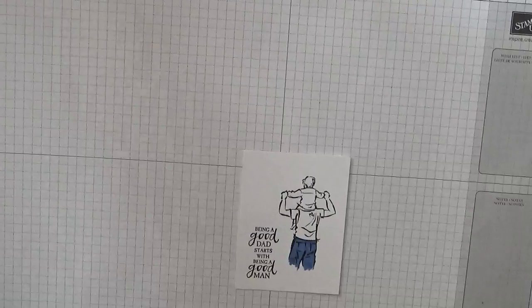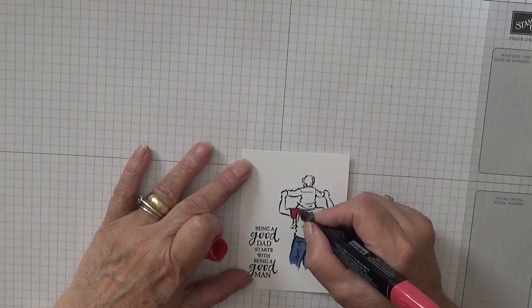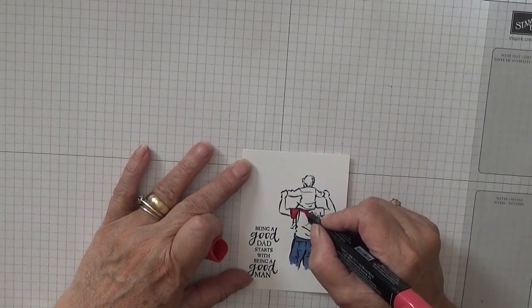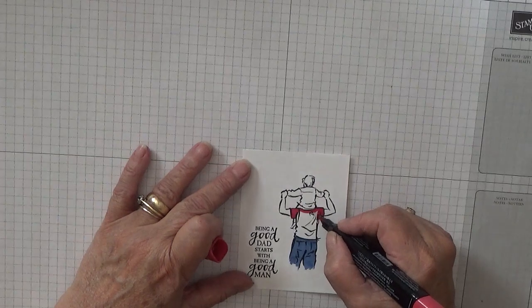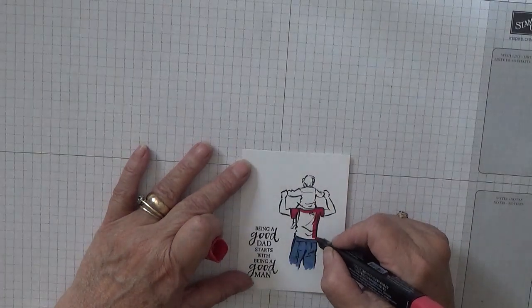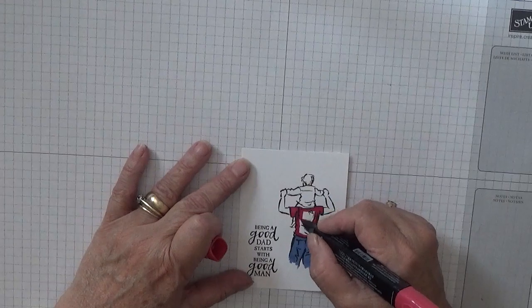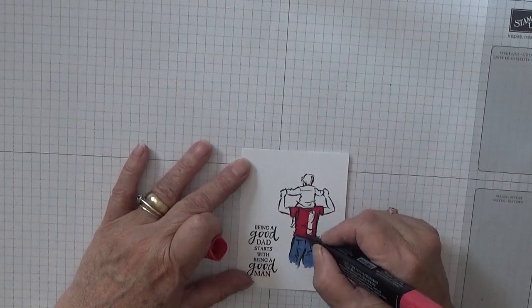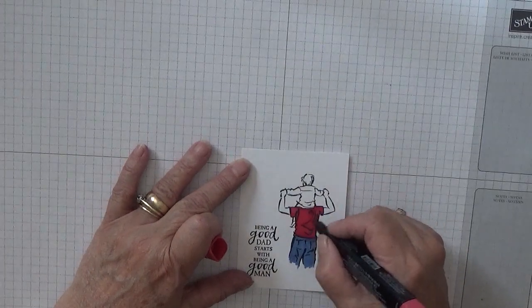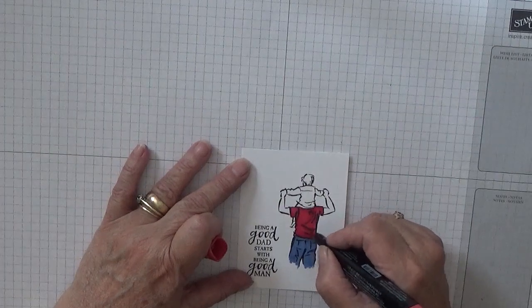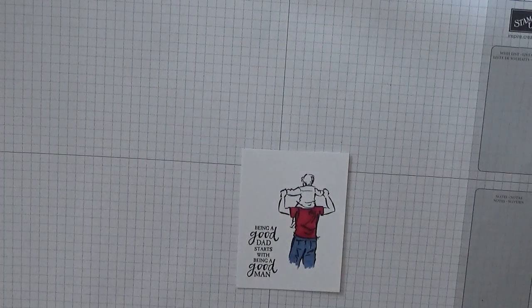I've got a red shirt for him. This is light Cherry Cobbler. Just go over the fold lines, make them stand out a bit more.